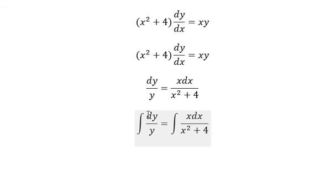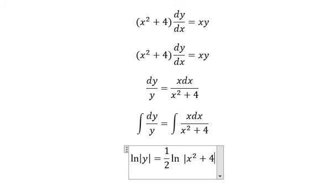The integral on the left gives ln of the absolute value of y. The integral on the right gives one-half ln of the absolute value of x squared plus 4, and we put C here.